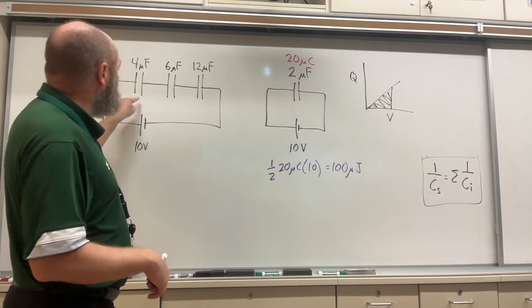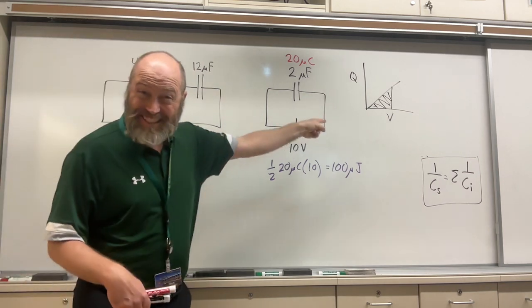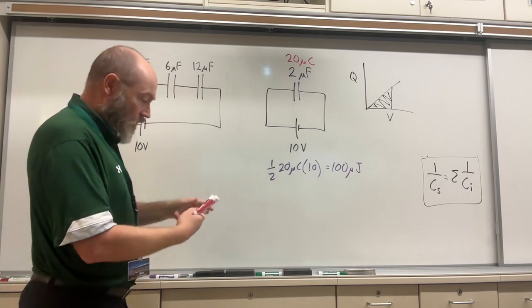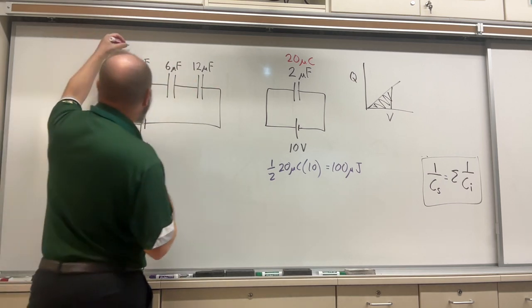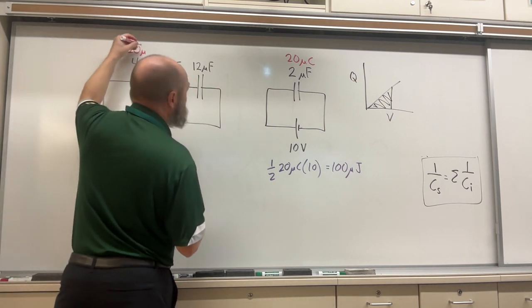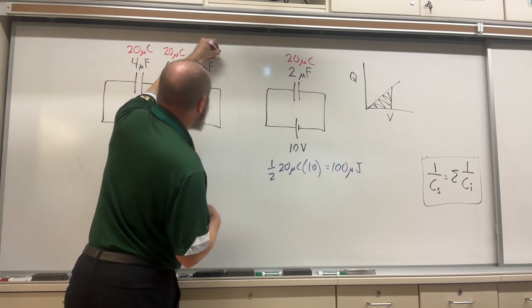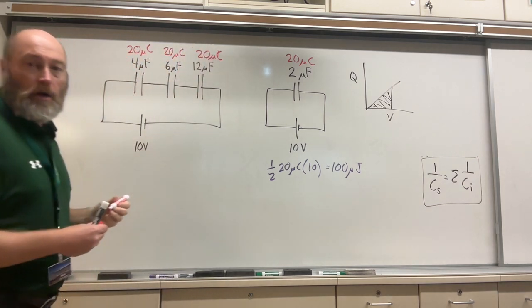So that means the charge here, here, and here has to be the same. Why? Because whatever charge goes on to here, goes on to there, goes on to there. So therefore, I know that this has to be 20 microcoulombs. This has to be 20 microcoulombs. This has to be 20 microcoulombs of charge.